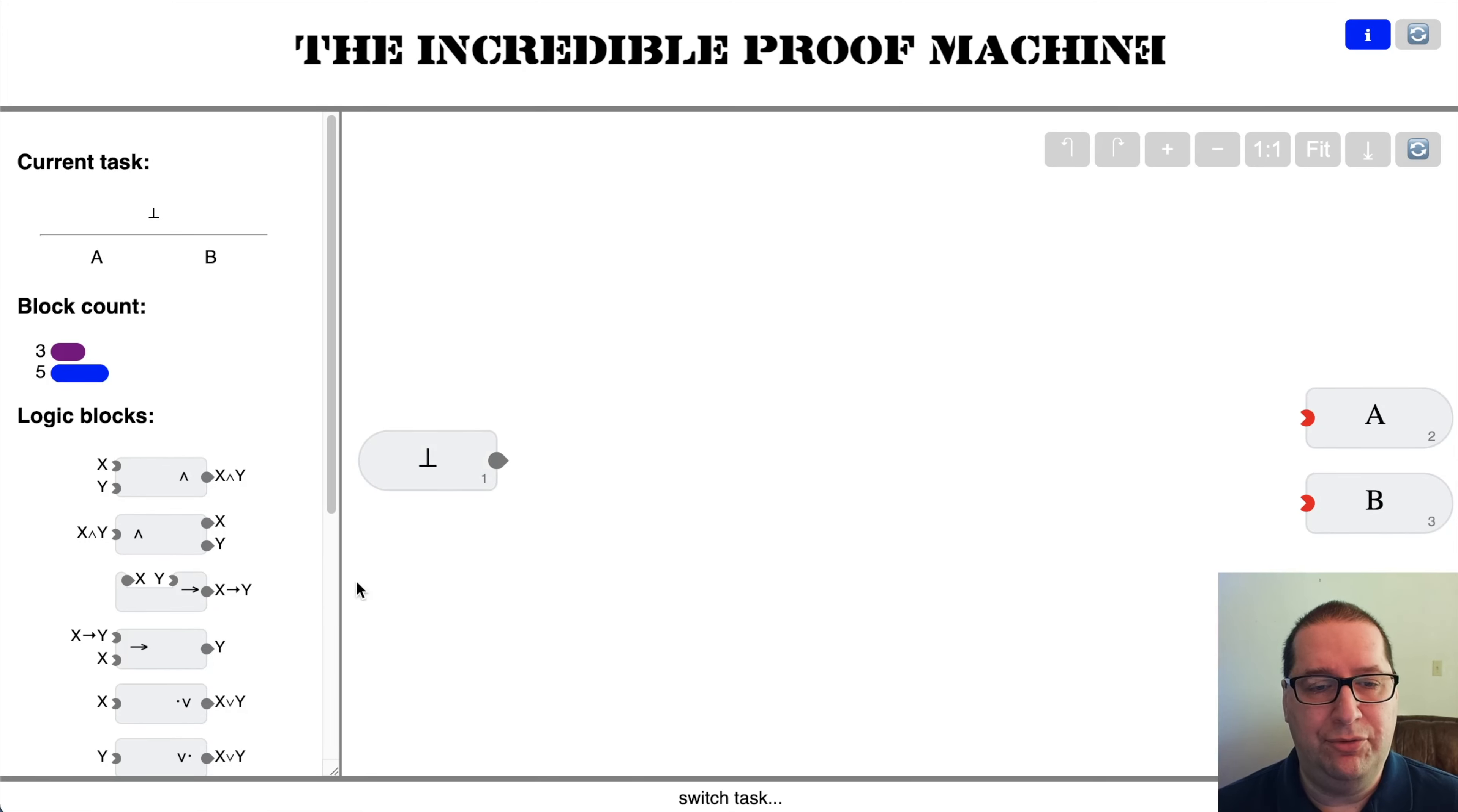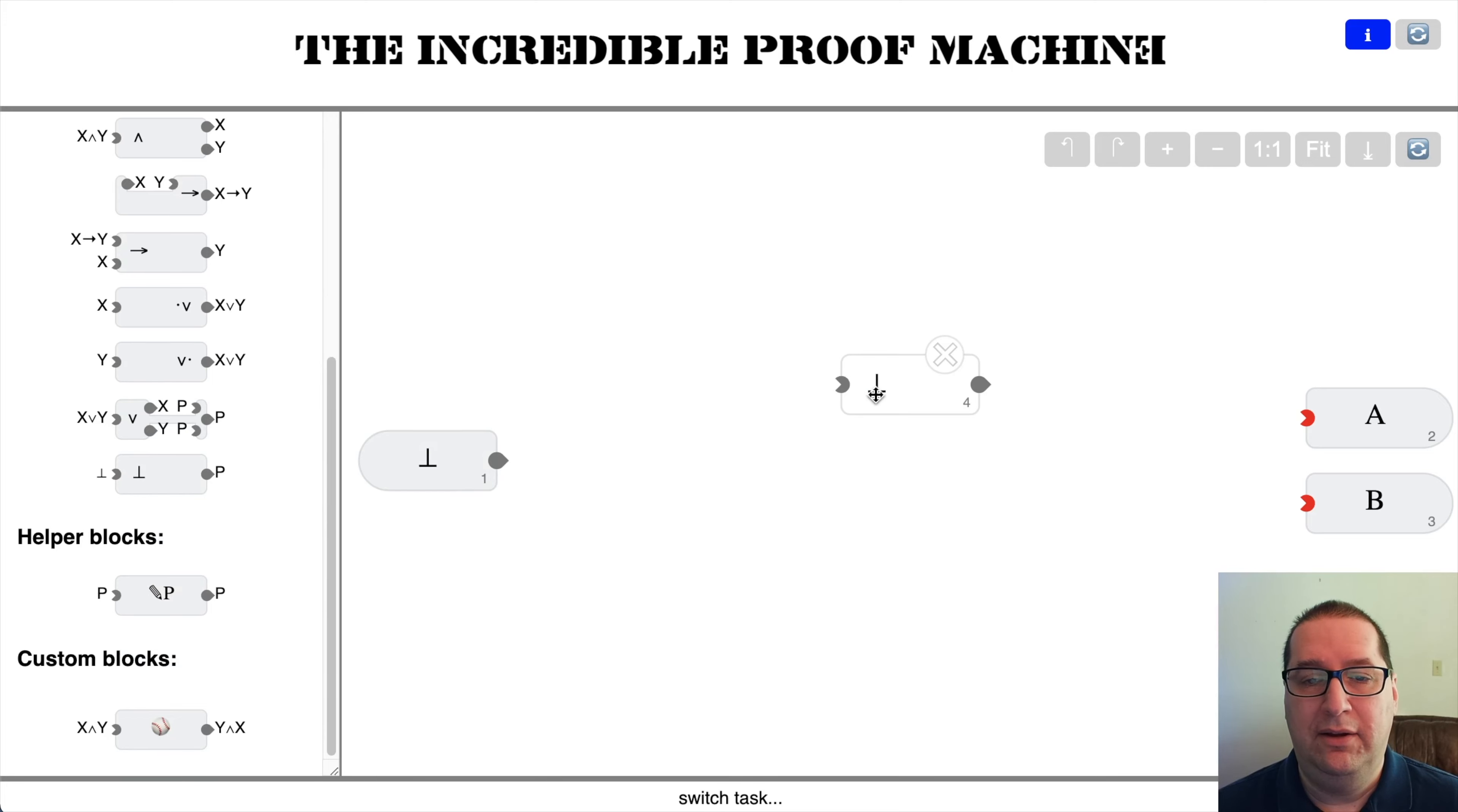All right, so now given false, we want to prove A and we want to prove B. I believe we cannot hook up the same ones here. We're going to have to actually have two false blocks, two absurd blocks to prove two different propositions.